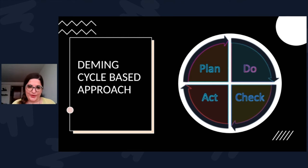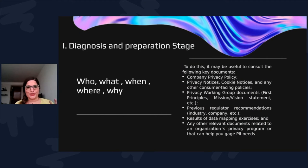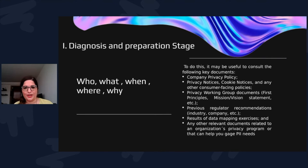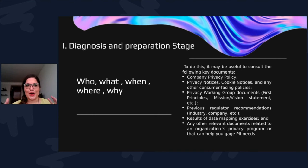I find this framework very useful for privacy programs. You start with your diagnosis — your W questions: who, what, when, where — basically how you figure out what you need to know. The best way to do this is to go through all your company's documentation on privacy or anything related: analyze it, study it. Go through your privacy policy, any cookie policies, Article 29 Working Group documents, any regulatory recommendations issued to you or your industry.